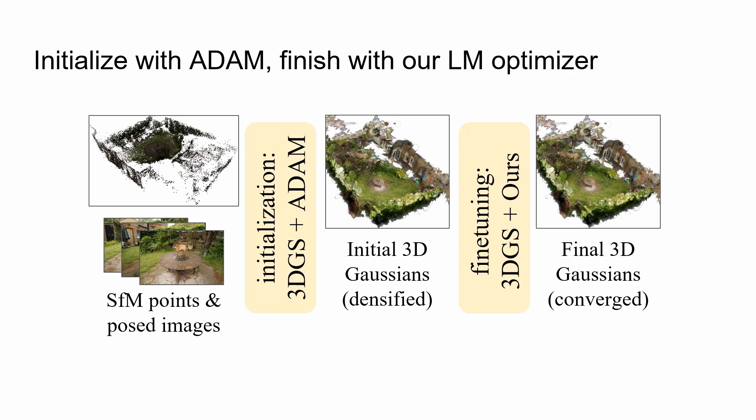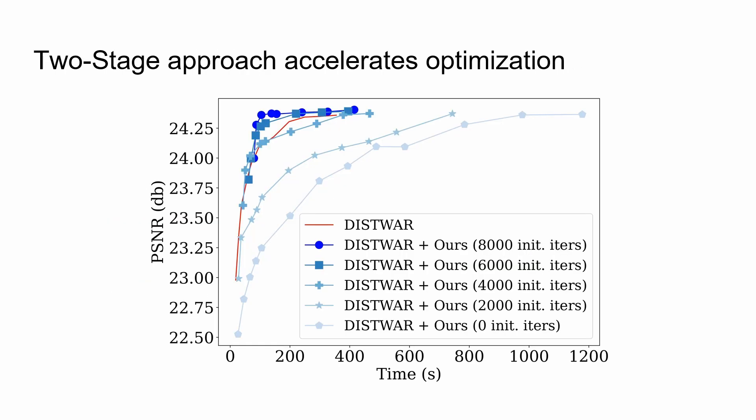Our method is divided into two stages. First, we initialize the Gaussians with Adam. Then we use our novel LM Optimizer to finish the reconstruction. This two-stage approach is both faster than only using the Adam Optimizer and faster than only using the LM Optimizer.